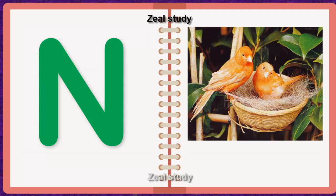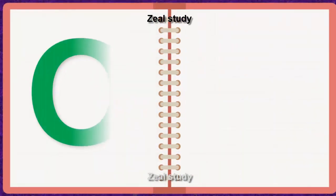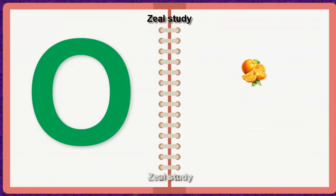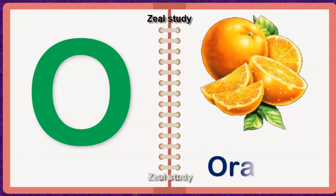N for Nest. N, E, S, T. Nest. O for Orange. O, R, A, N, G, E. Orange.